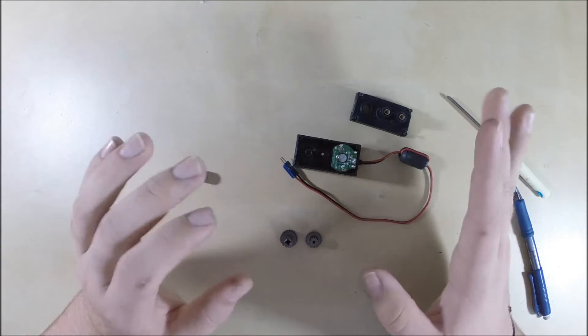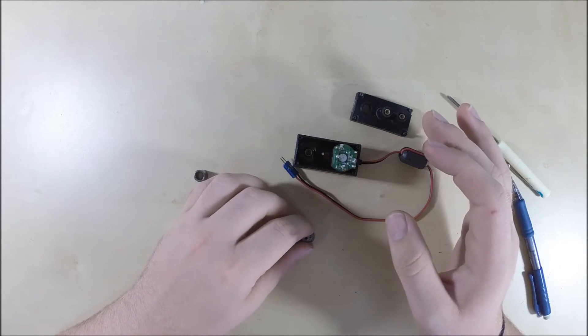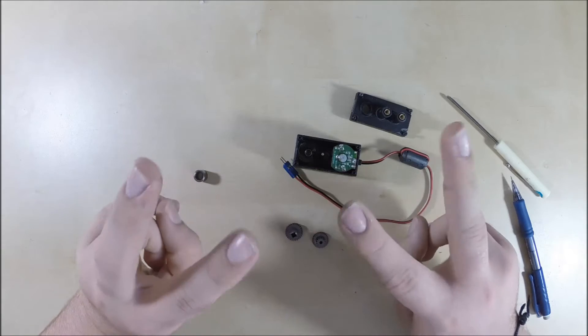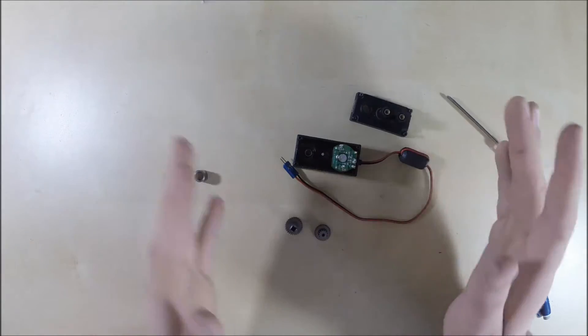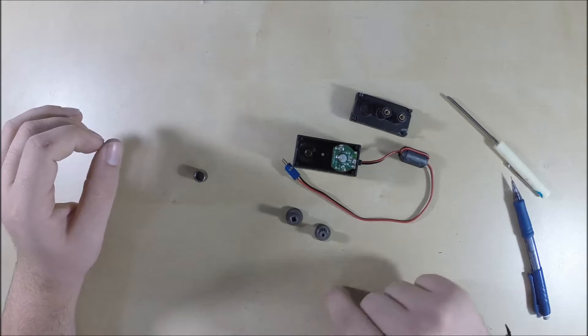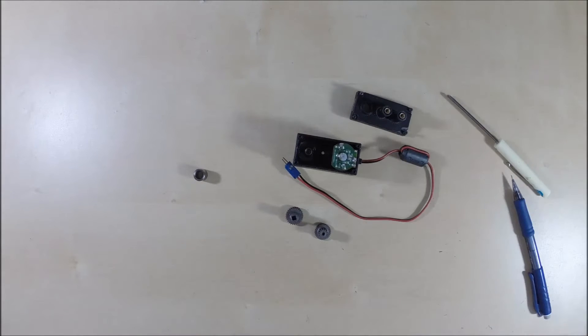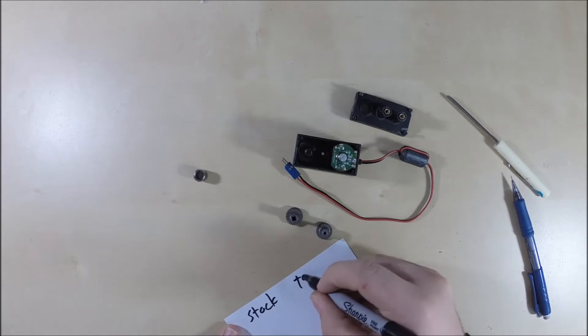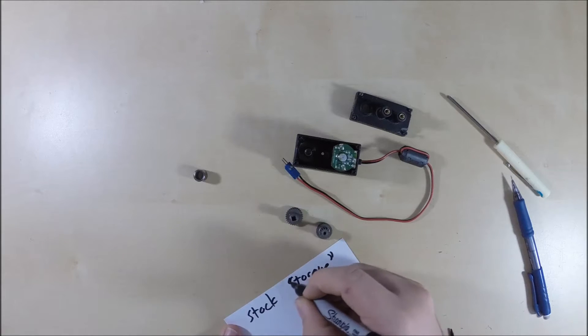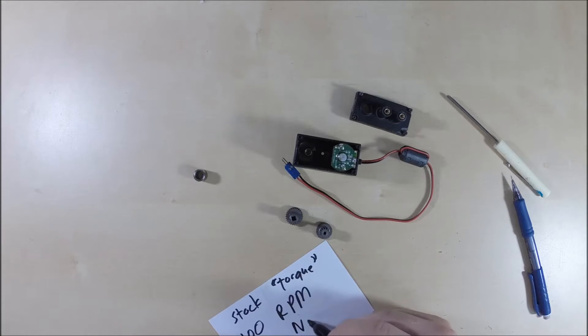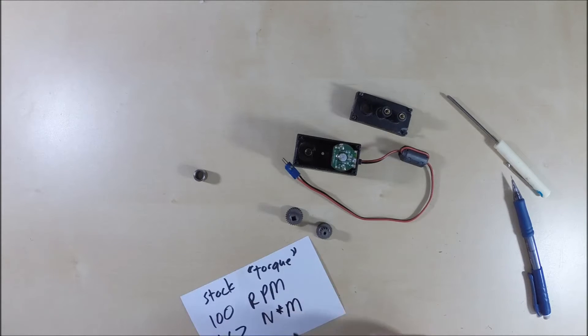The default gearing in the 393 motors, when you unbox them, is a torque gearing. It has more strength than speed. So it spins at 100 RPMs and it has a torque of 1.67 Newton-meters. So this is a torque setting.